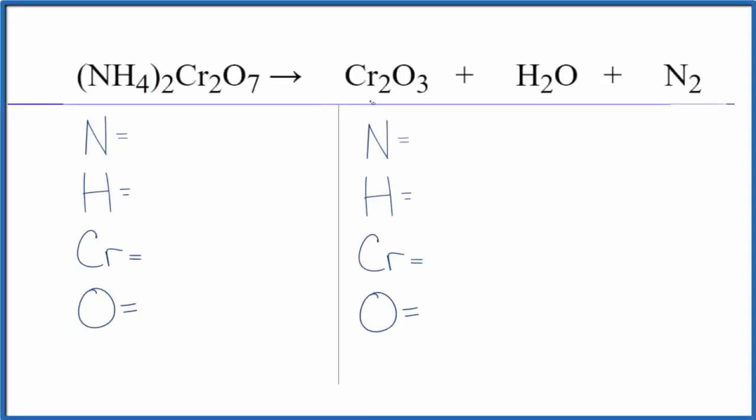In this video we'll balance the equation for the decomposition of ammonium dichromate. So let's count the atoms up. We're gonna need to be careful here, there's a lot going on. So we have one nitrogen, but two...